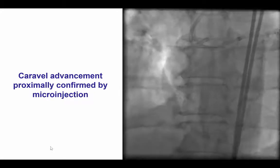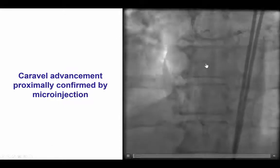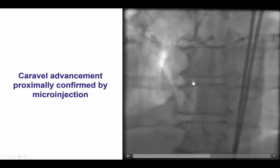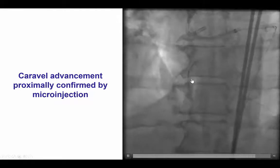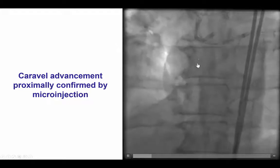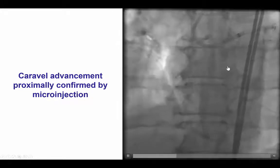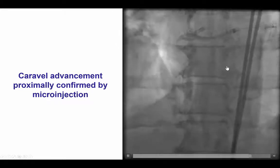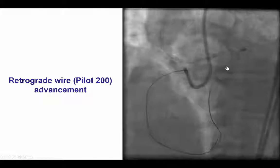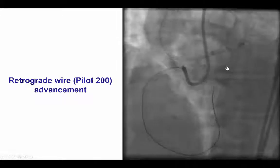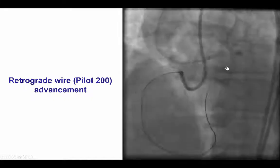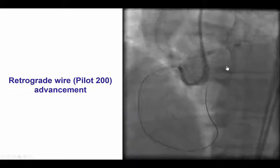We were able to advance to the proximal, where we had difficulty advancing further, likely because of the previously placed stent. We did a micro-injection, the so-called CARLINO technique, to confirm that we were in the right space, and to help modify the plaque and help us advance a little bit further into the proximal right coronary artery. Eventually we were able to advance the CARAVAL microcatheter over a PILOT 200 all the way to the right coronary ostium in the subintimal position.